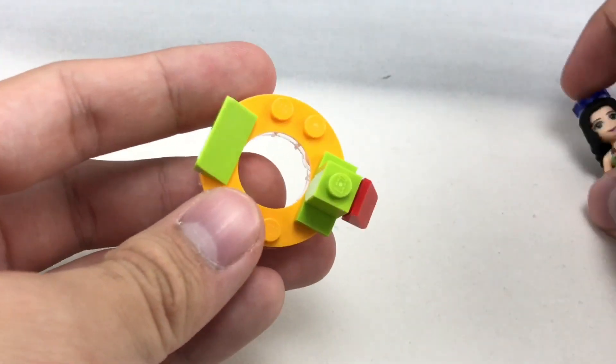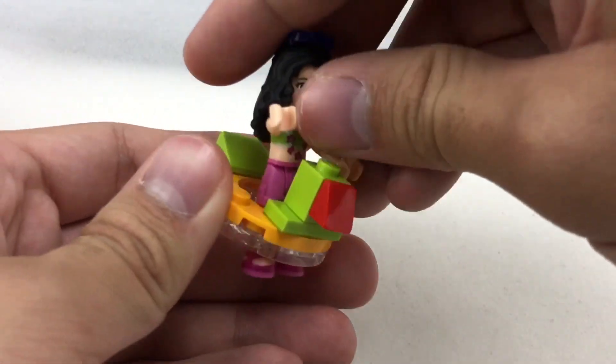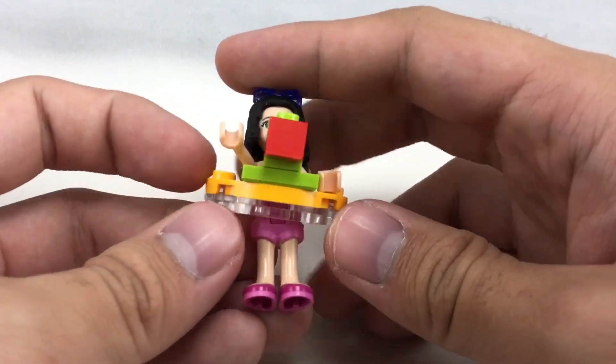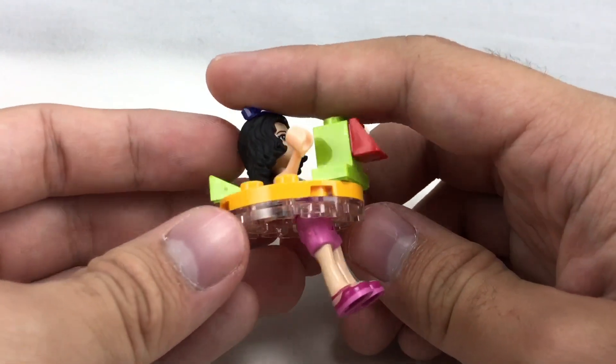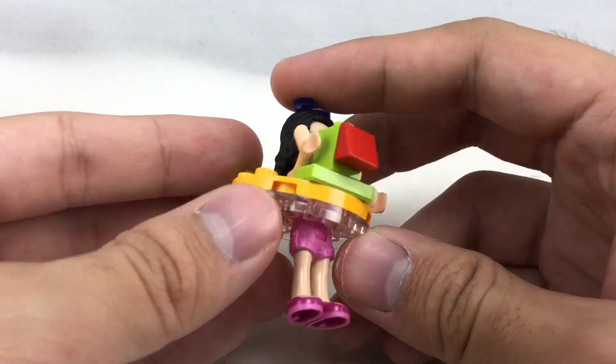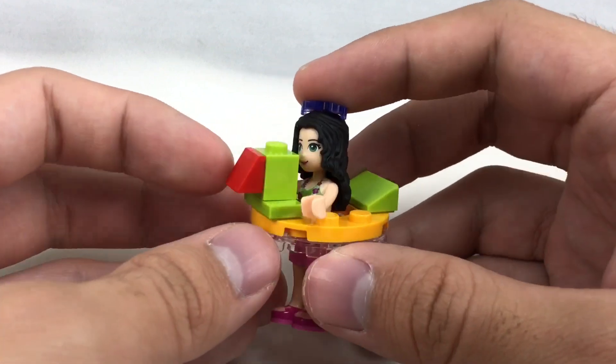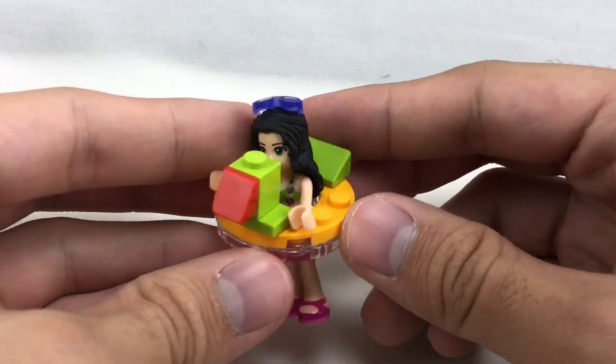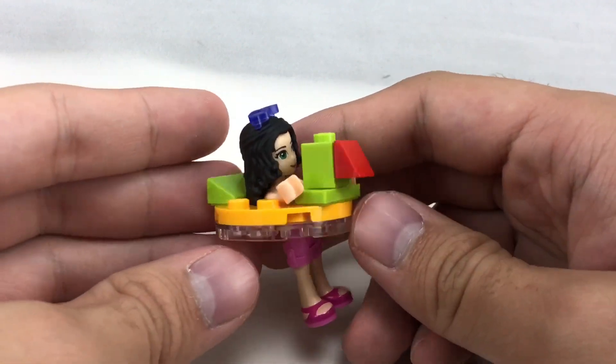And then for this little float right here you can stick Emma inside and this is kind of like a little pool float design. They've used this a lot before - I remember they had that in that little Olaf set which was a polybag from I think last year. And the design for this uses some lime and some red pieces, like a lime double cheese slope and a red single cheese slope. So that's pretty cool.